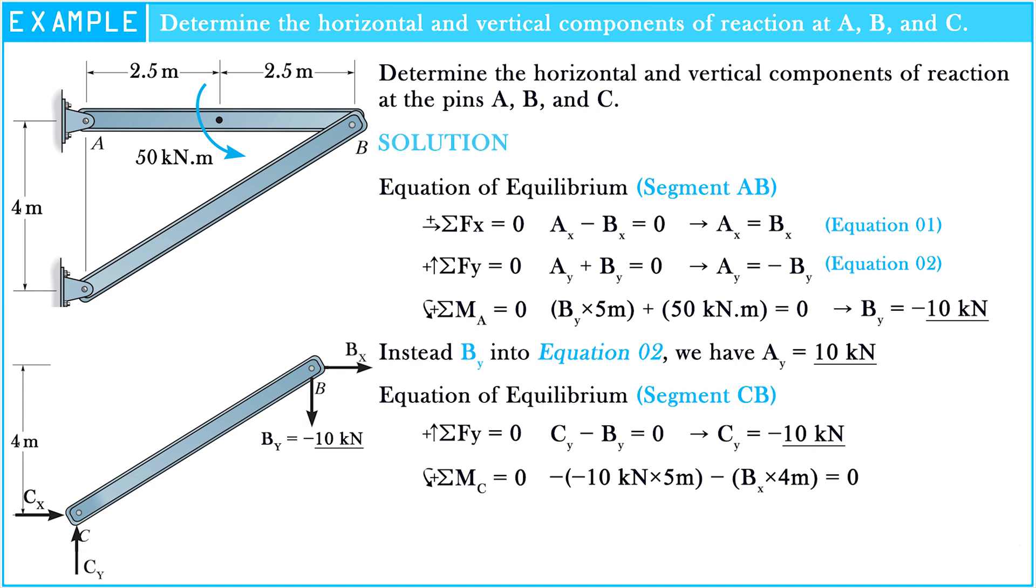Hence, through calculation, Bx equals 12.5 kilonewtons. The sum of forces along the x-axis equals zero. So Cx plus Bx equals zero. Hence, Cx equals negative 12.5 kilonewtons.